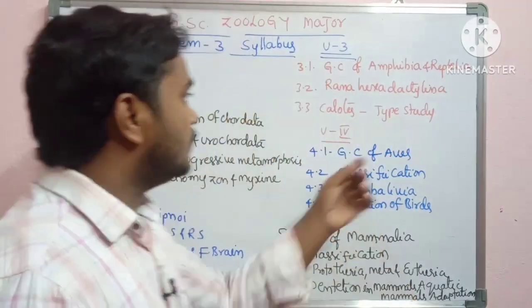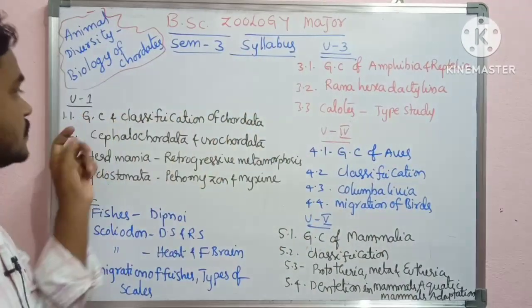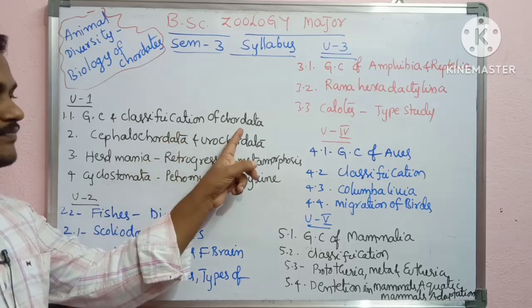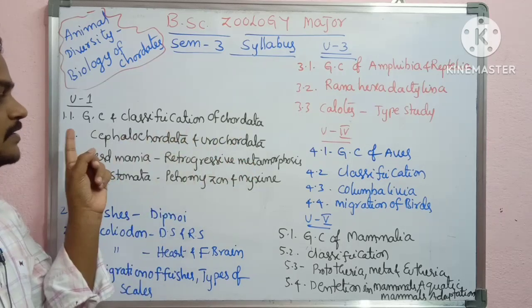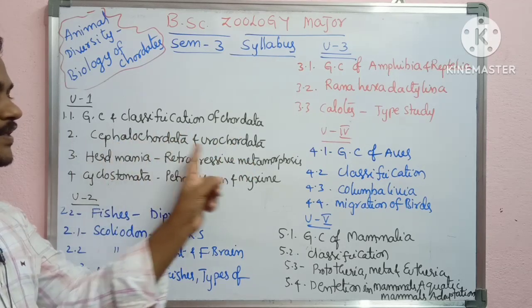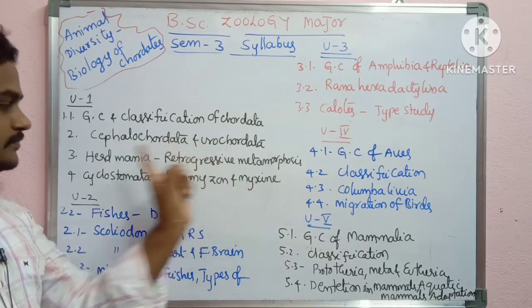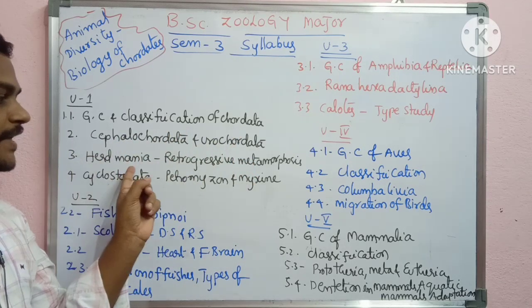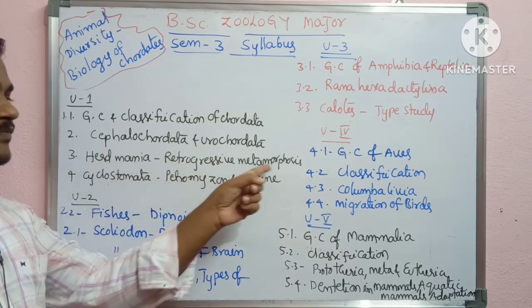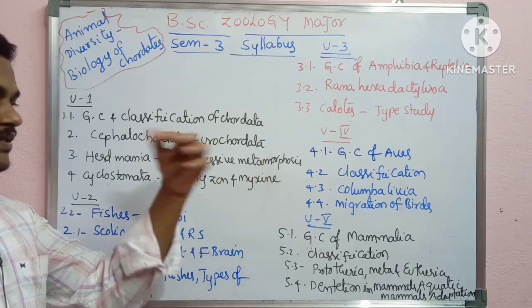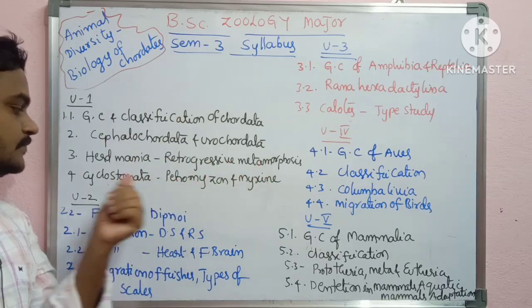Unit 1 covers general characters and classification of Chordata. This includes Cephalochordata, Urochordata, then Hemichordata — retrogressive metamorphosis and life cycle.